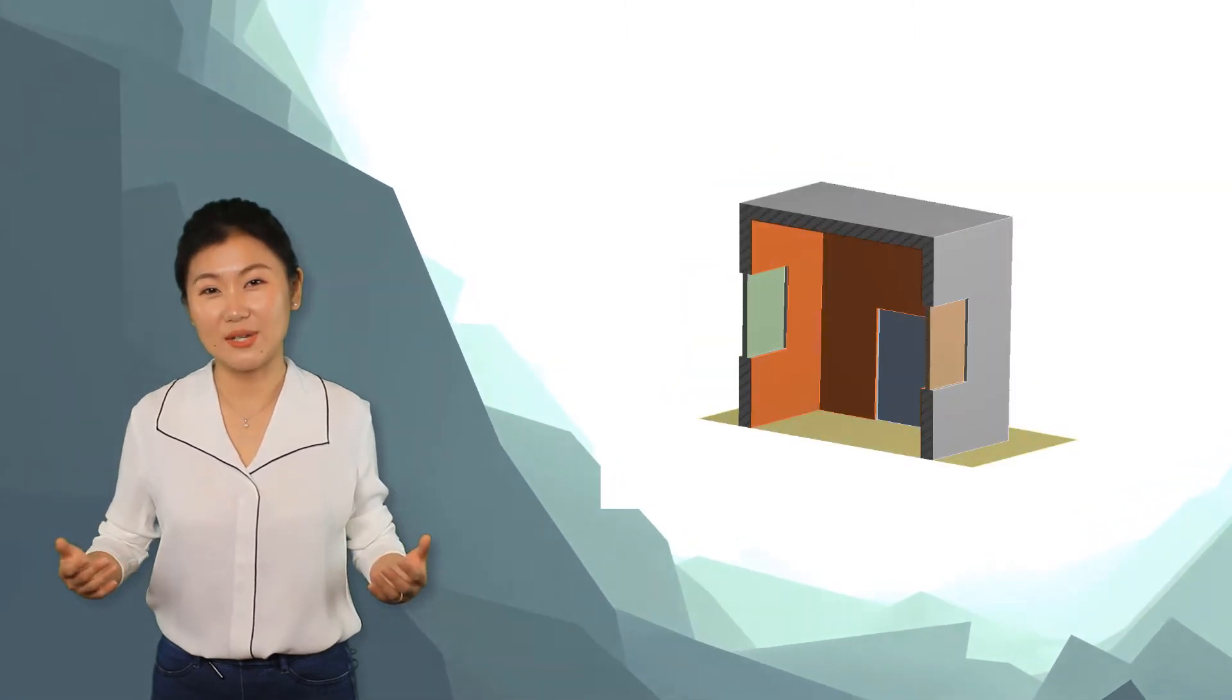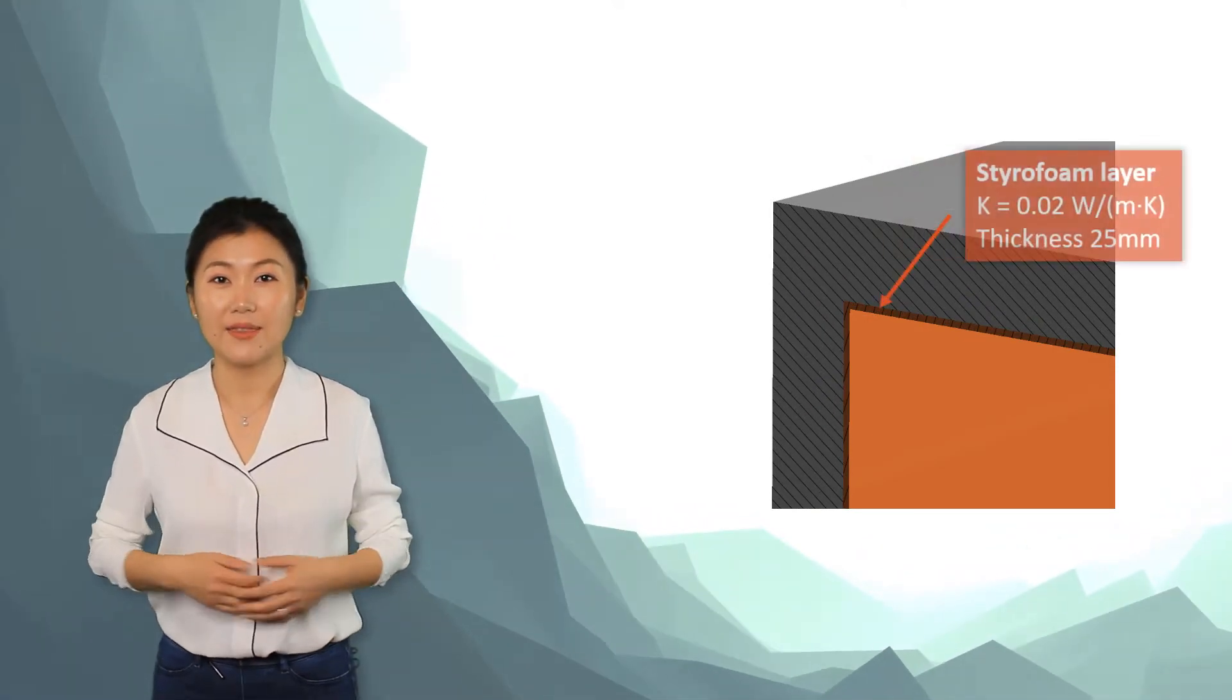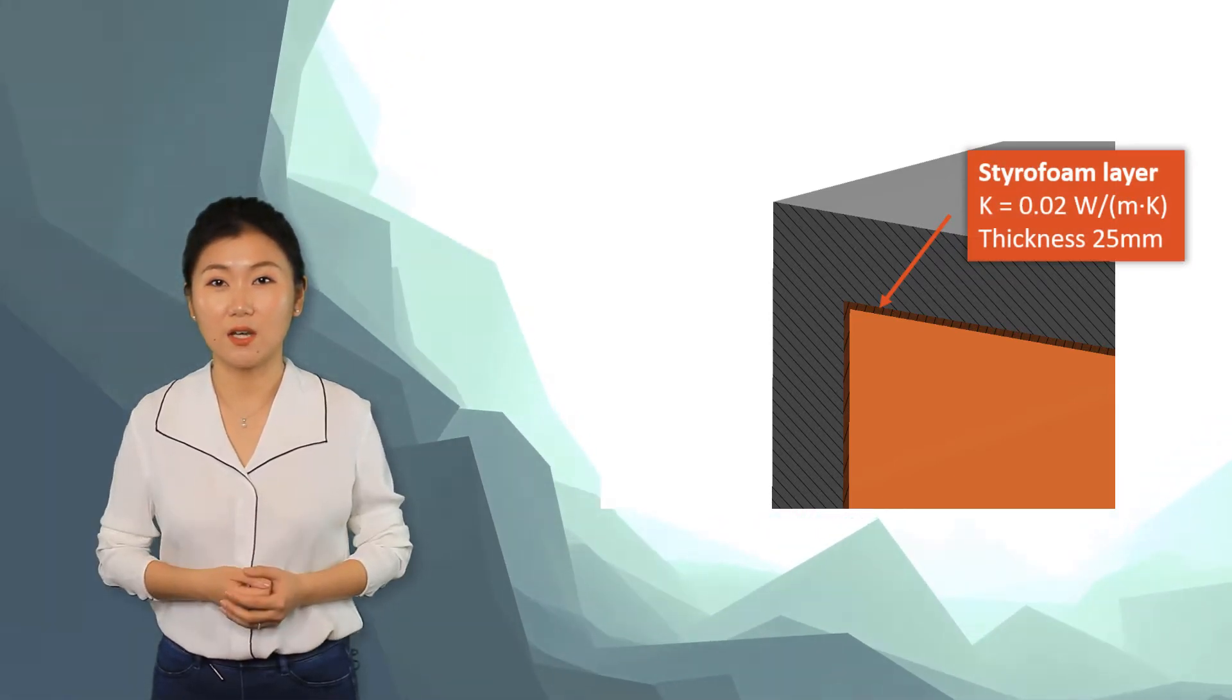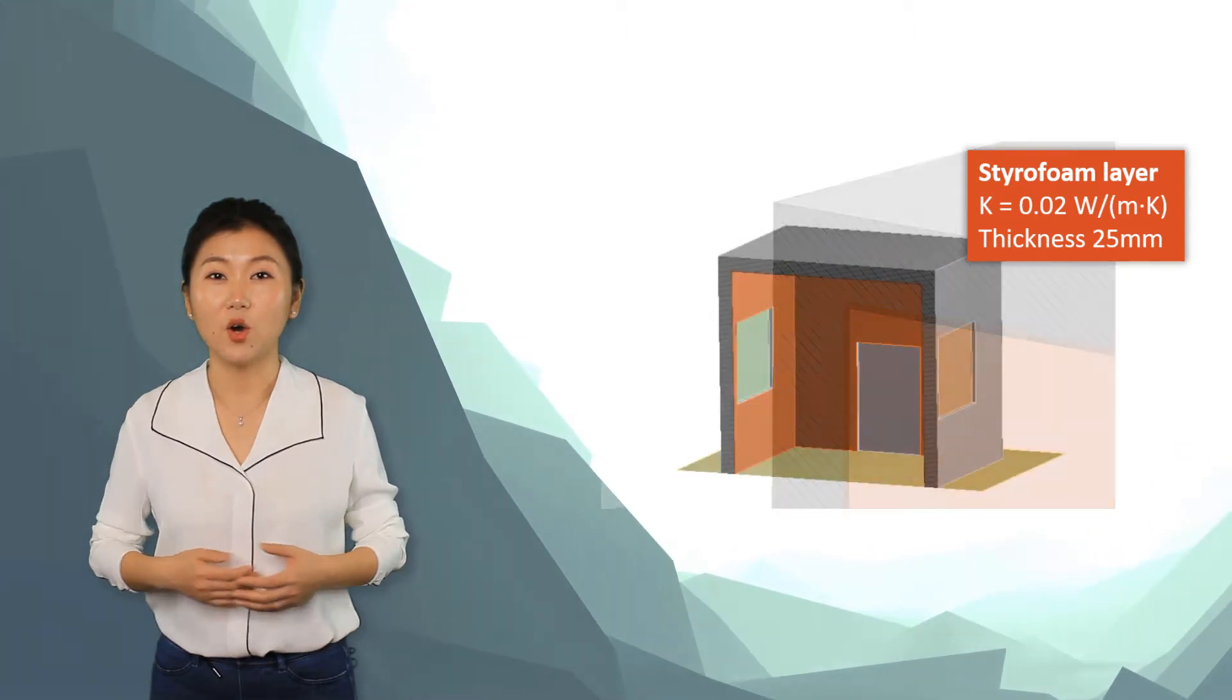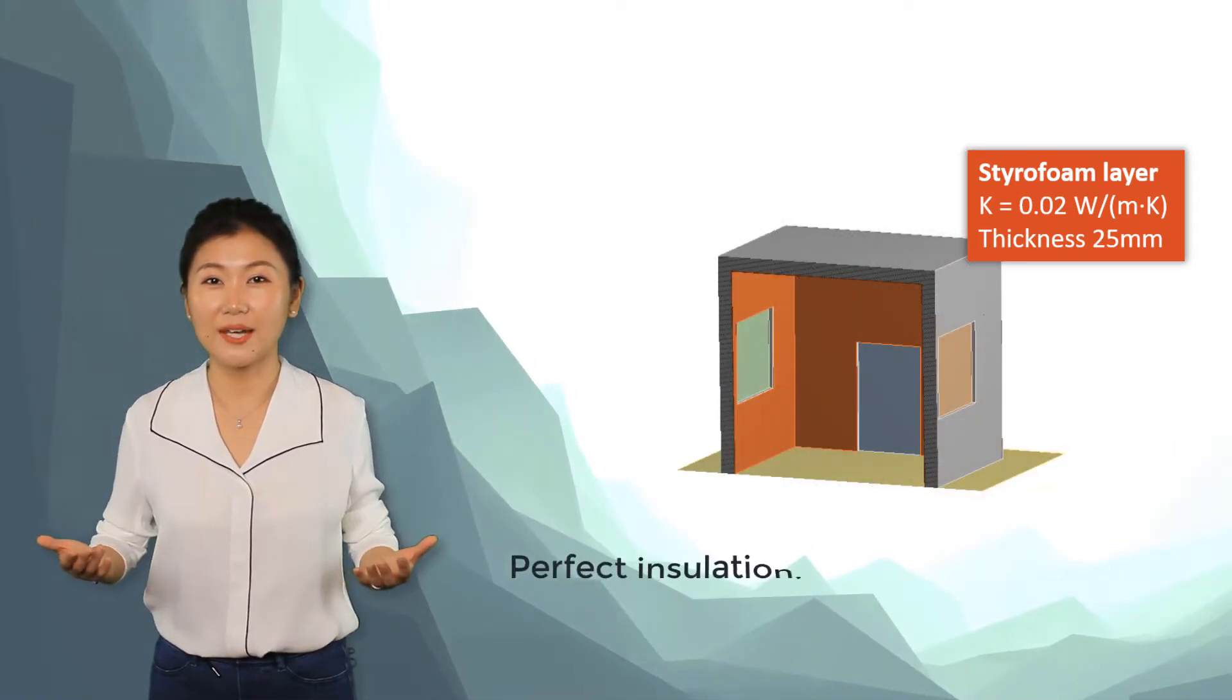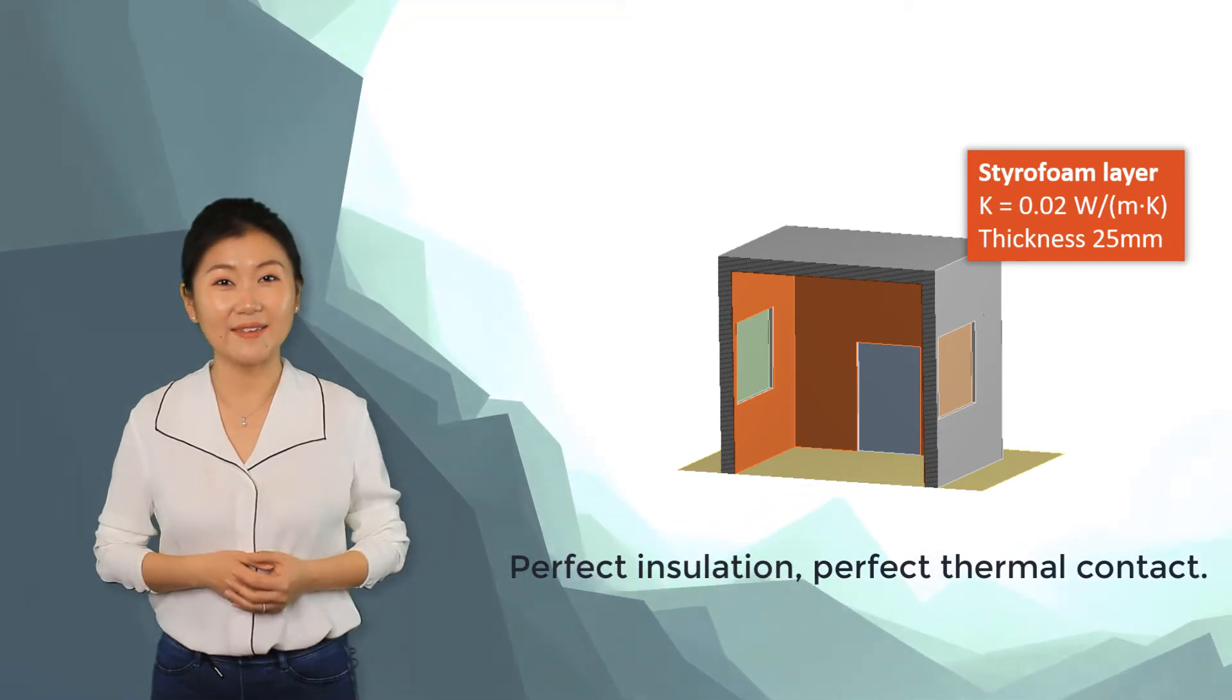The owner is unhappy with the result and decides to add an insulation layer inside the walls to increase the internal temperature and at the same time save energy costs. The insulation layer he adds is made of styrofoam, which has a low conductivity. The thickness of the foam layer is 25 mm. The owner pastes the foam layer to the wall perfectly, so here we assume he covers all the interior surface, and the thermal contact is also perfect. Let's run the simulation again and check the results.